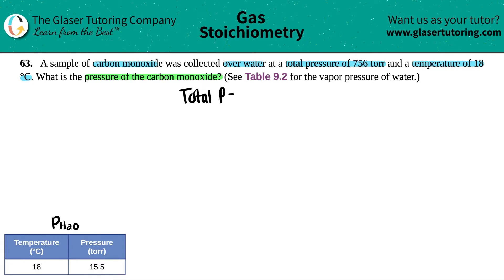The total pressure in this mixture is 756 torr. Now, when they say carbon monoxide was collected over water, this is just a fancy way of saying you're mixing carbon monoxide with water.